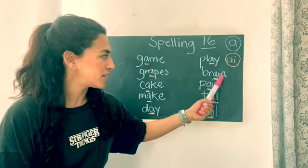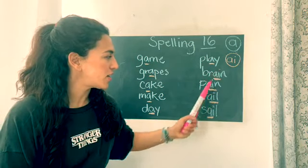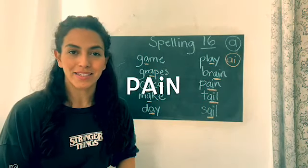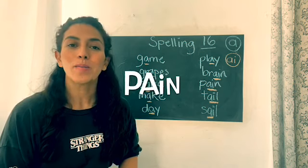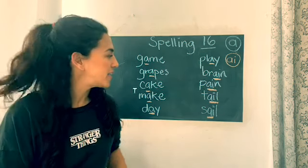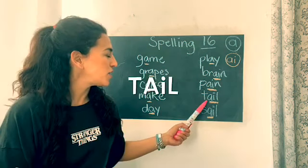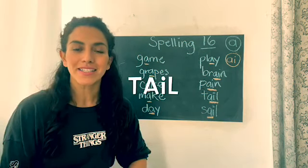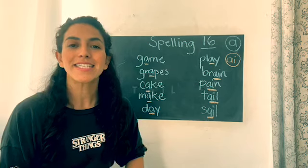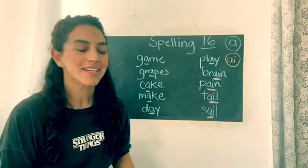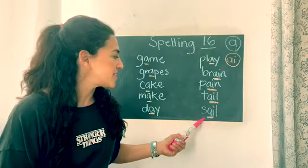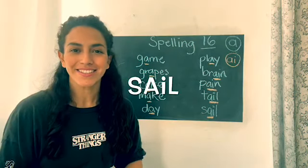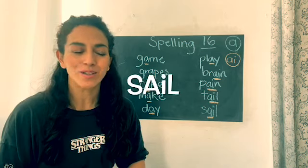Look, the spelling pattern changes here. Number eight: pain. Number nine: tail. And number ten: sail.